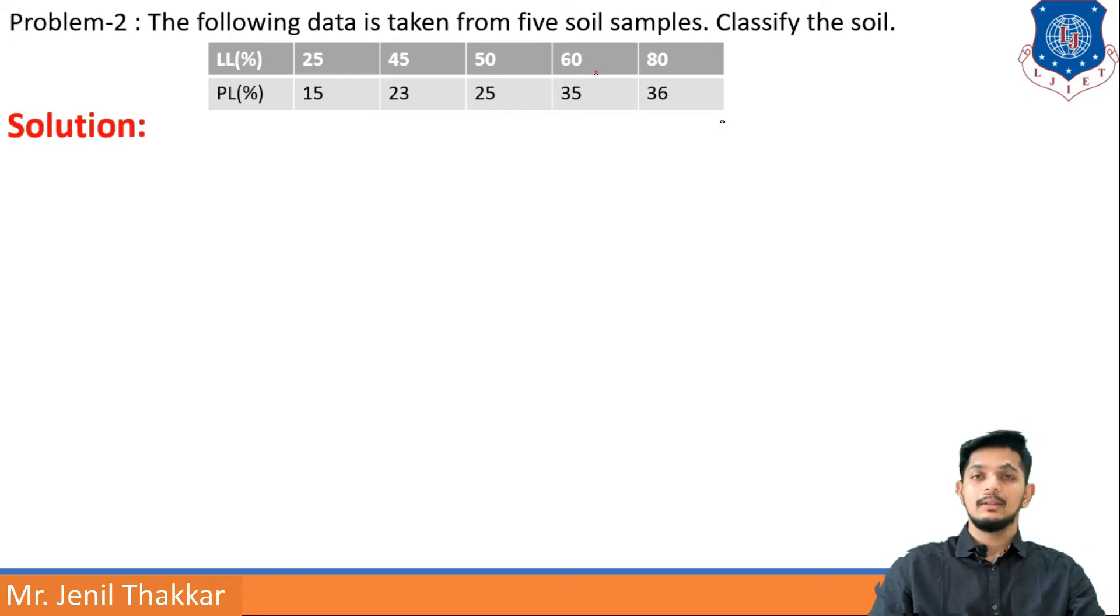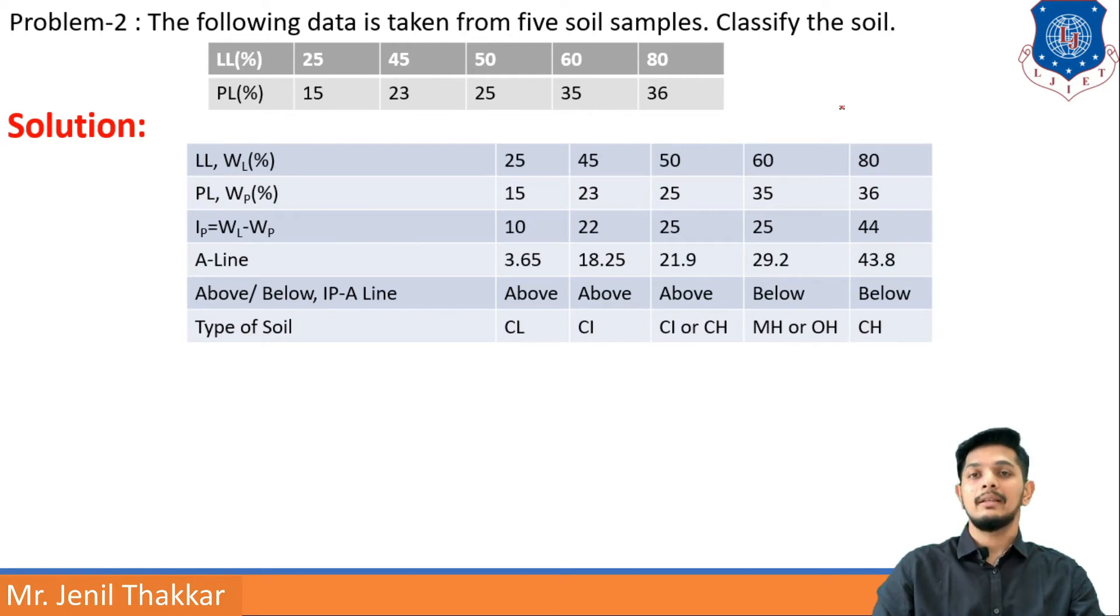LL when it is 25, PL was 15; 45, 23; 50, 25; 60, 35; 80, 36. Let us solve this. For solving this we need to prepare a table as there are five soil samples. We don't want to create complex calculation, we have to keep it simple.